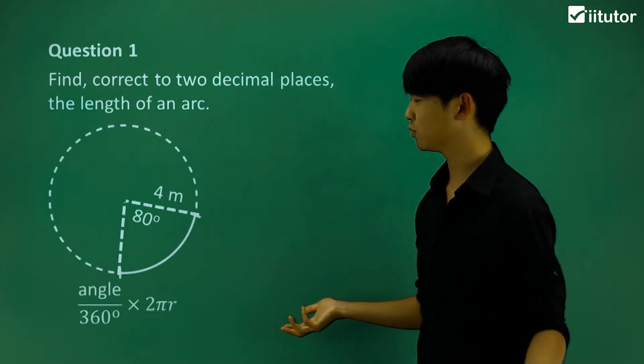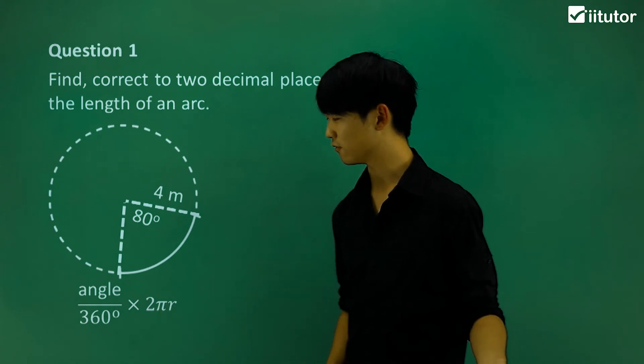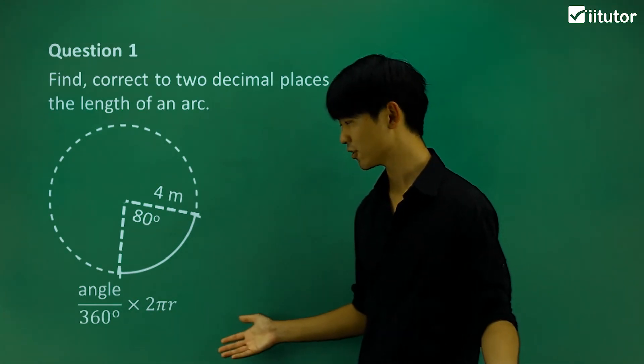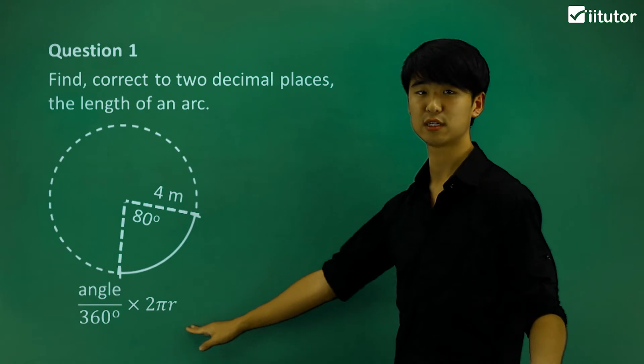So what did we just say? Well, we just said we can find the length of the arc by the angle divided by 360 degrees multiplied by my circumference.